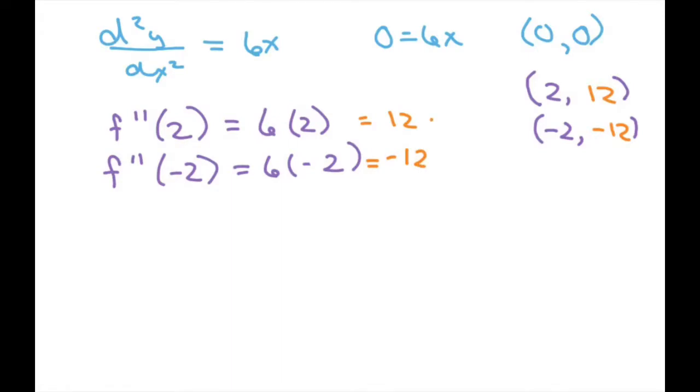So 12 and negative 12. So since this is positive here, this means it's concave down. And if it's negative here, that's going to be concave up.